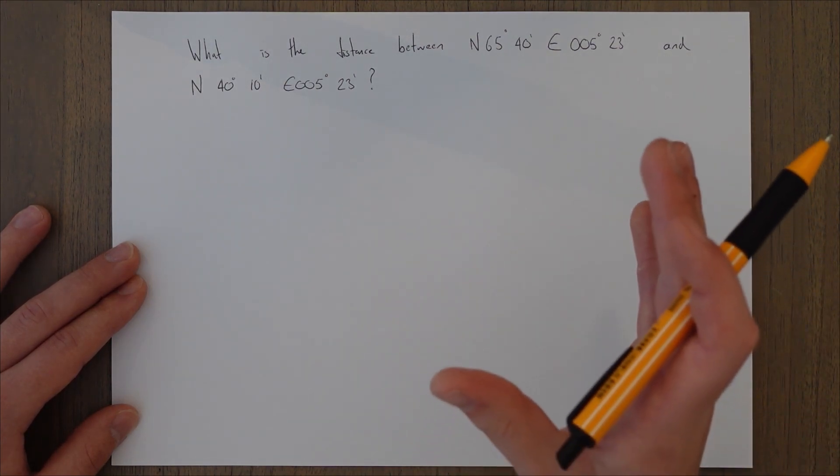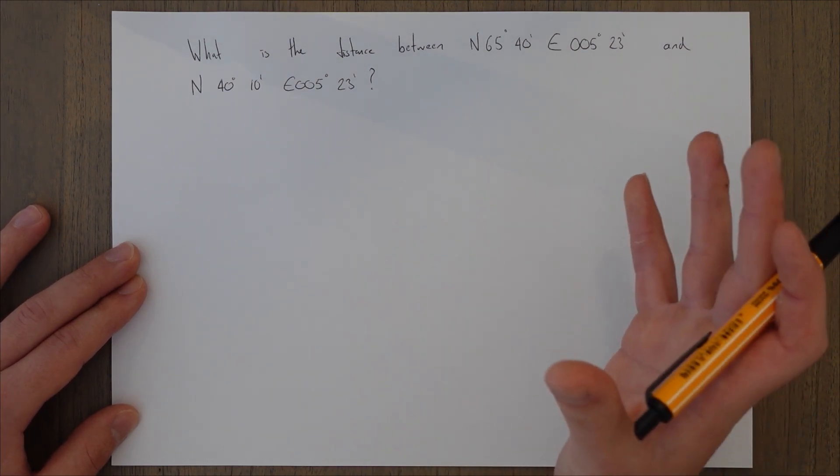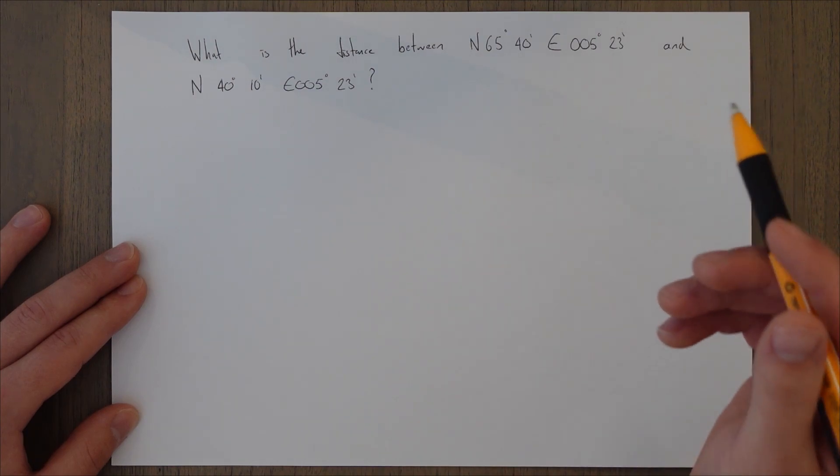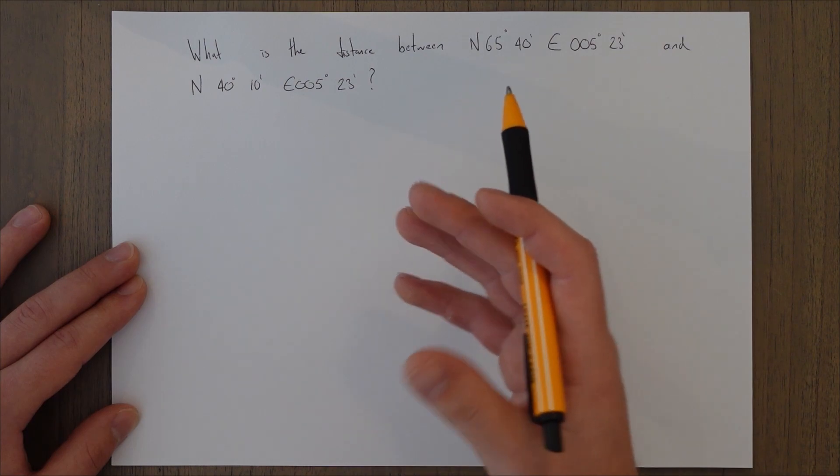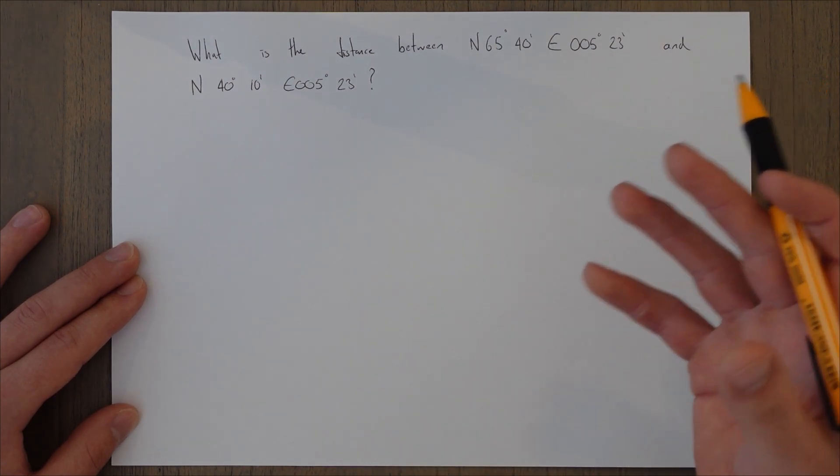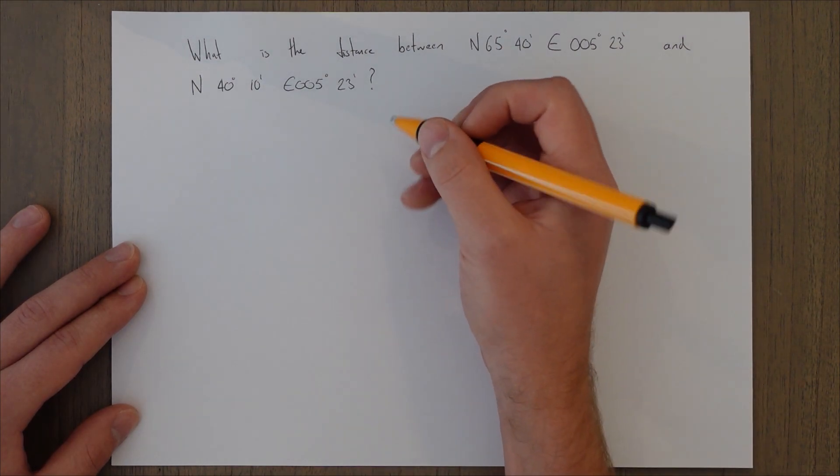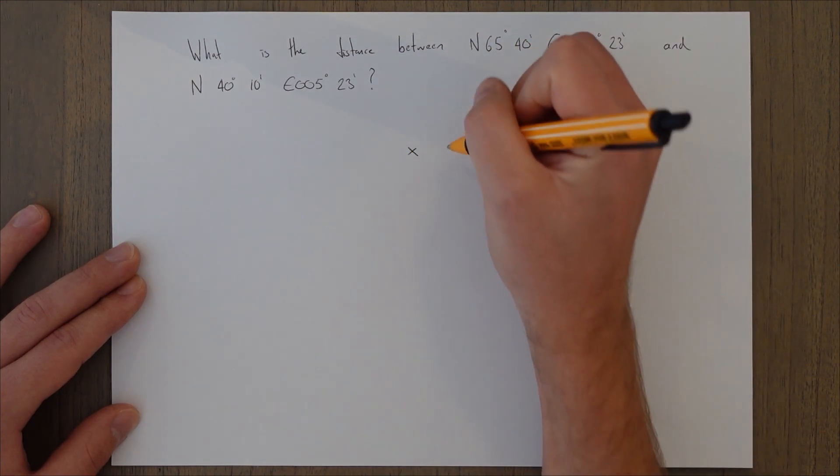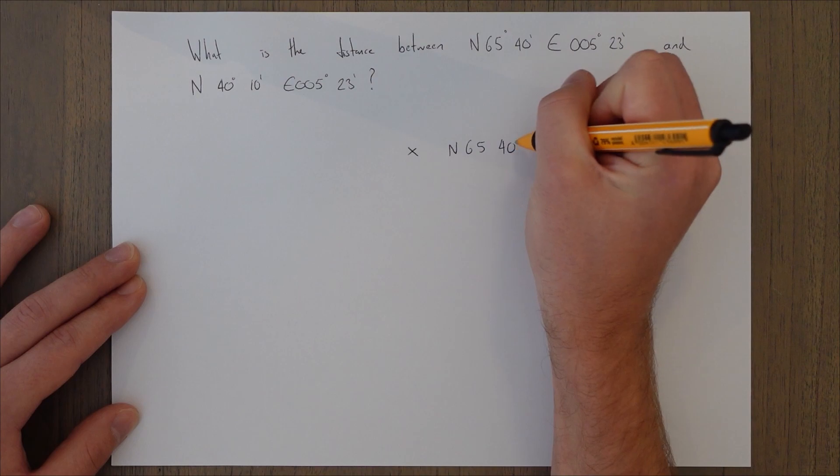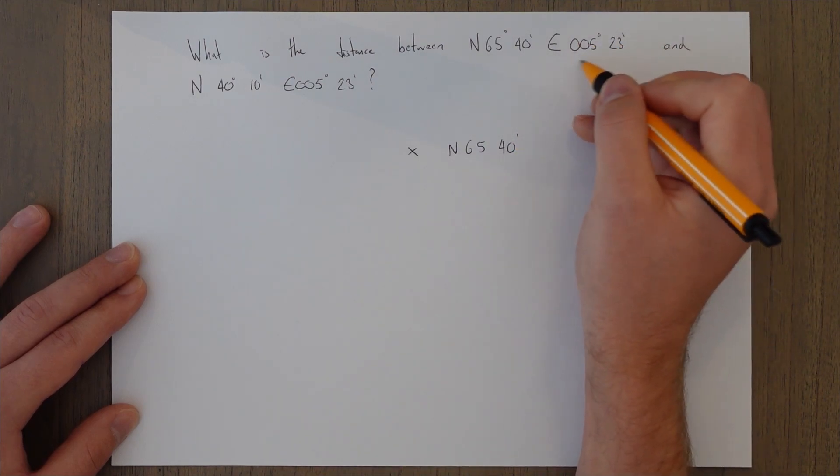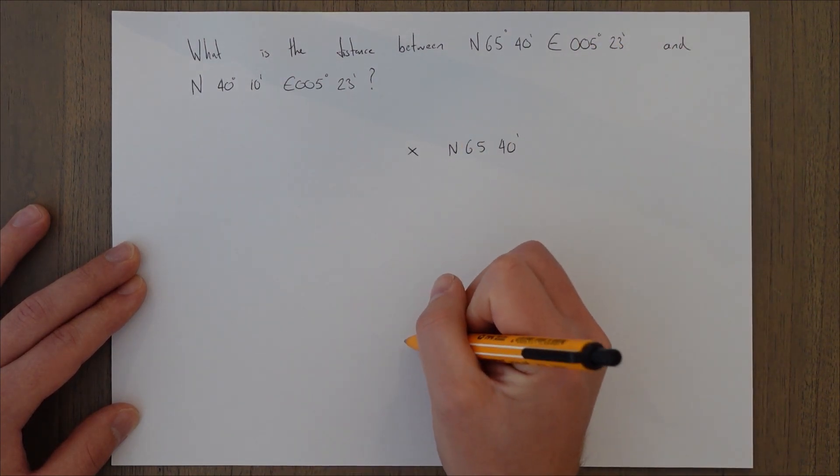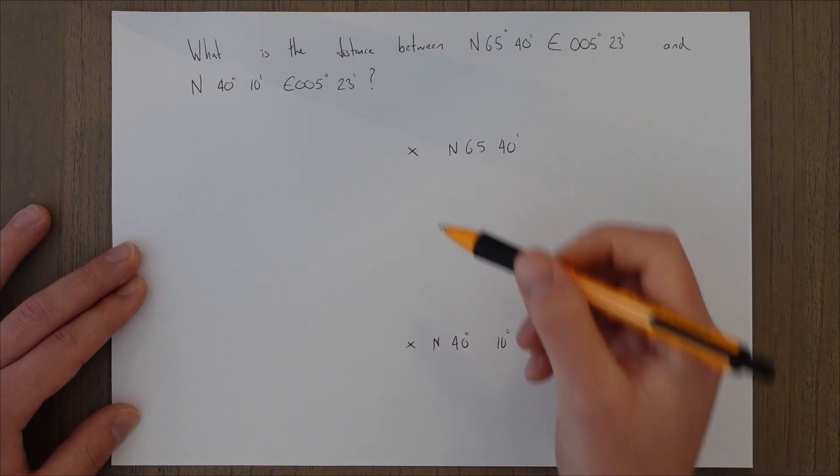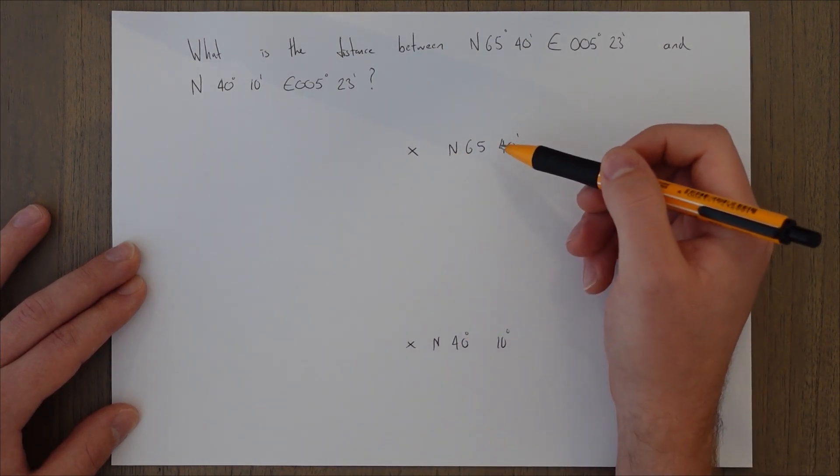So my first bit of advice for GNAV, which I'm sure I'm going to say a thousand times during the rest of this course, is draw the effing picture. If you draw it out, you can see that in this case, the change will require a subtraction from the big one to the small one. So basically, you've got two points on the same line. You've got one up here, which is your north 6540. East 00523, we don't really care about. And we've got this one, which is 40 and 10. So you can see that to find the distance between the two, we're going to have to take this one from this one, simple.